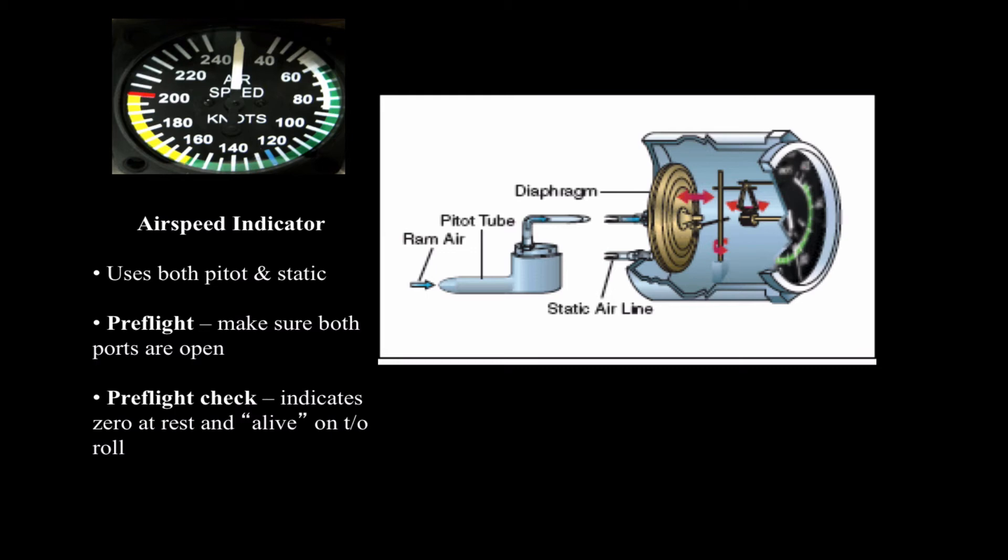When we preflight the airplane as an IFR pilot, we want to certainly make sure that the ports are open. Your static port is free and clear. Get right down there and eyeball it. Make sure there's no little miniature spiders. Make sure that the pitot tube is open, and I would also highly recommend that you test the pitot heat switch as well. In the preflight, before you take off, the indicator indicates zero at rest. It's not stuck at some value, but it's zero. And very important too that it comes alive on takeoff run. I have a call out that I like my students to say, and that is airspeed alive, because if it's not coming alive and there's a delay there, I might have a problem.